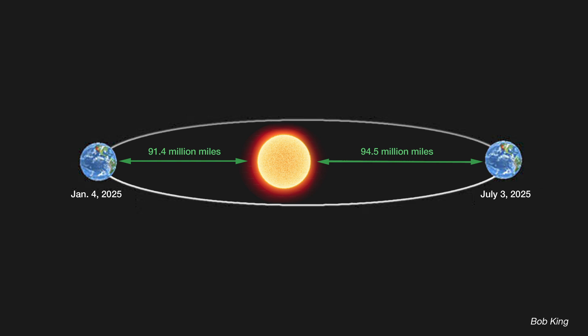Now, you might think that the Sun and Earth are closest in June or July when it's hot here in the Northern Hemisphere. But actually, it's just the opposite. We are closest to the Sun in early January and farthest away in early July.